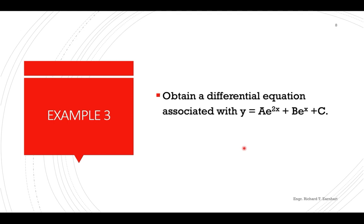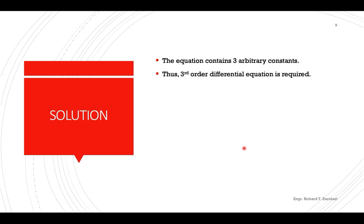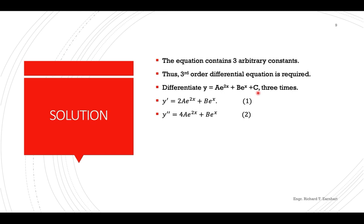Example number 3: obtain the differential equation associated with y equals ae^(2x) plus be^x plus c. The equation contains three arbitrary constants, so a third-order differential equation is required. We differentiate the original equation three times; the first derivative eliminates c, and we continue differentiating to obtain the second and third derivatives.